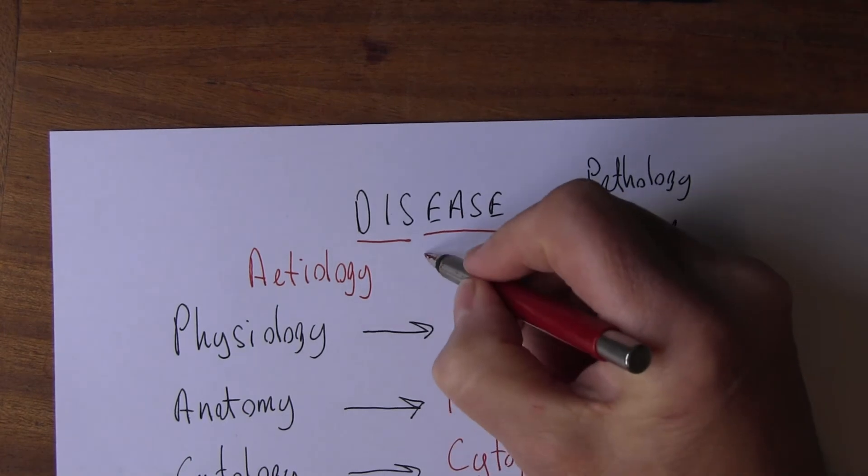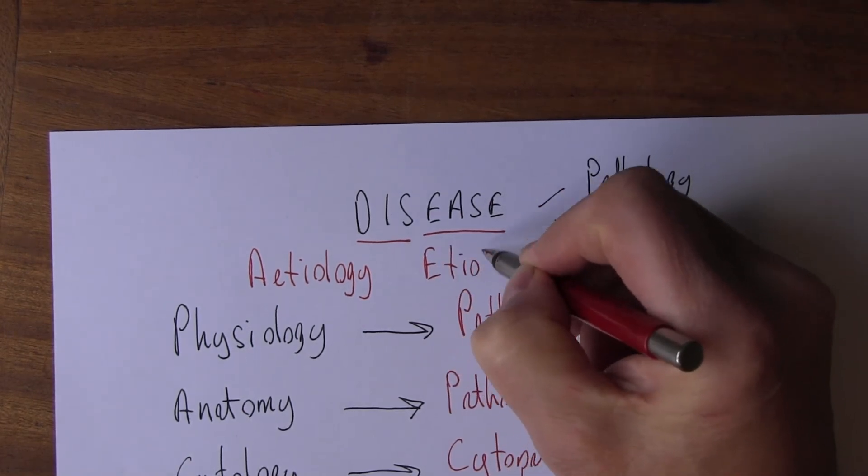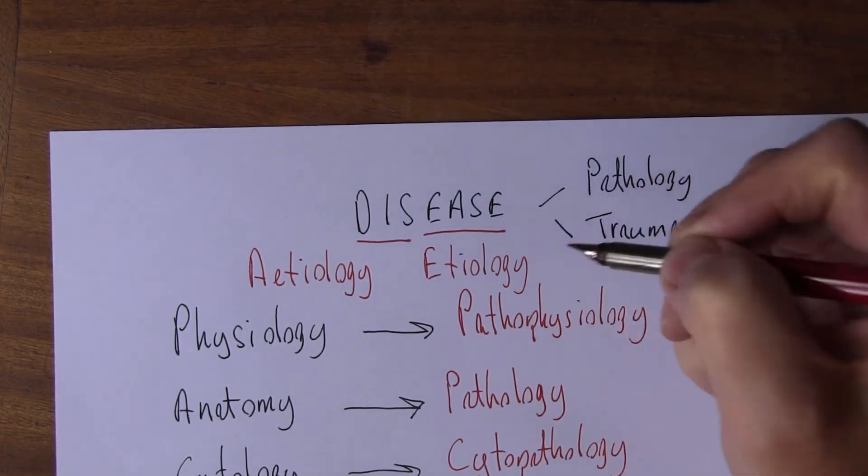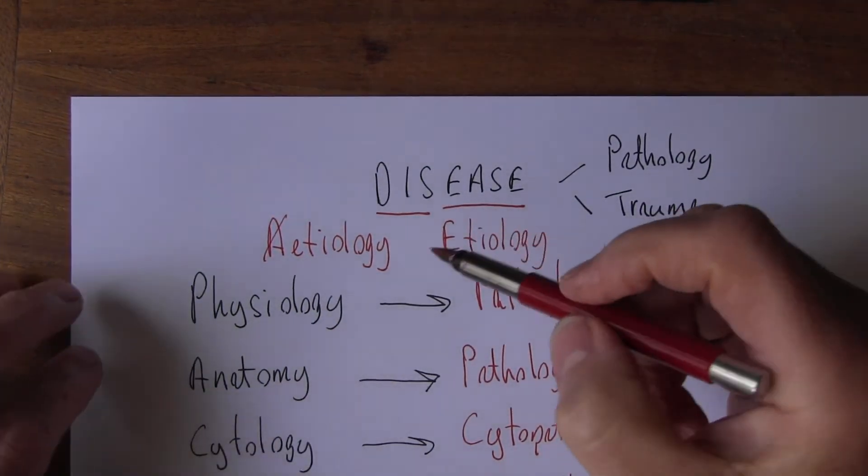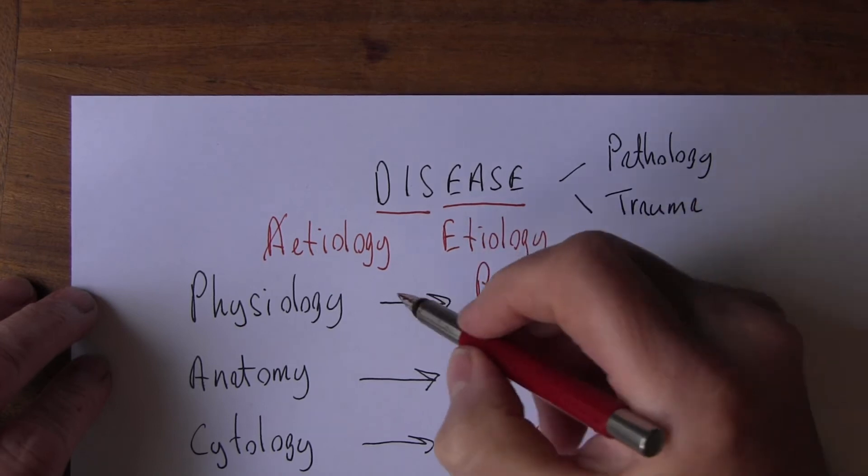Now etiology can be spelt without the 'a'. The 'a' is the English way. It doesn't matter - etiology, aetiology, whatever you want to call it.